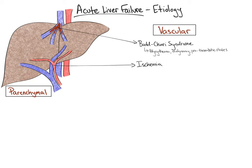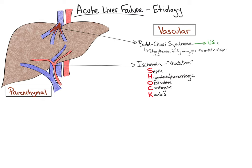In addition, ischemic damage to the liver from low-flow arterial states can lead to failure. This is often referred to as shock liver. In this case, the acronym SHOCK can be utilized: Septic, Hypovolemic or hemorrhagic, Obstructive, Cardiogenic, and combos of any of the above. We work up the vascular causes by obtaining an ultrasound of the liver with Dopplers and assessing for various shock states with broad cultures and a transthoracic echocardiogram.